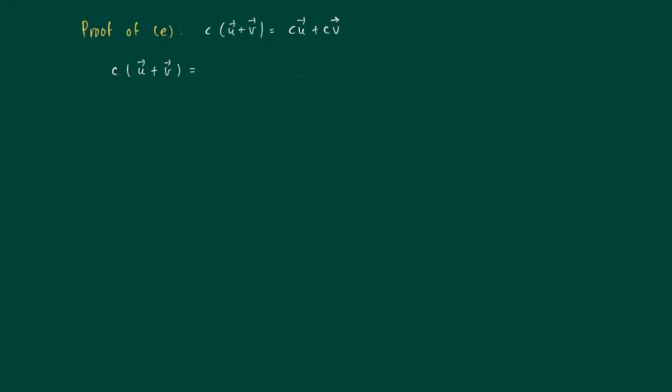So c times u plus v, we first work out what it actually says that we have u plus v. If you write u in coordinates, then it's u1, u2, etc. And if you write v in coordinates, v1, v2, vn.